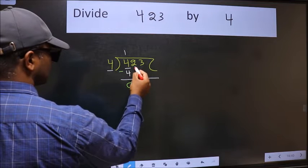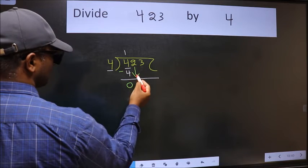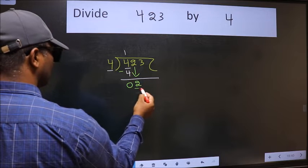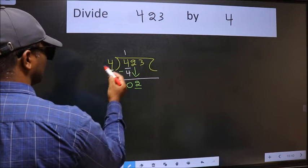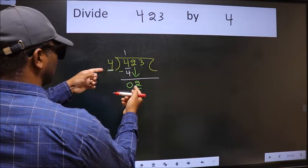After this, bring down the beside number. So 2 down. Now here we have 2 and here 4. 2 is smaller than 4.